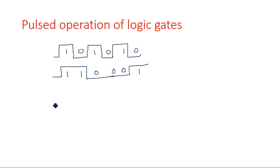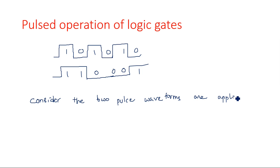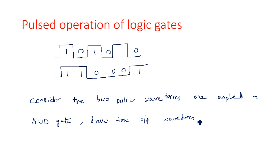When we give input waveforms like these pulsed waveforms to any logic gate, what is the output waveform corresponding to that? Consider two pulse waveforms applied to an AND gate — draw the output waveform. Here I am taking a first input and a second input, and now I am taking the same inputs for our AND gate. What happens to the output waveform when we give this type of waveform at the input of a two-input AND gate?